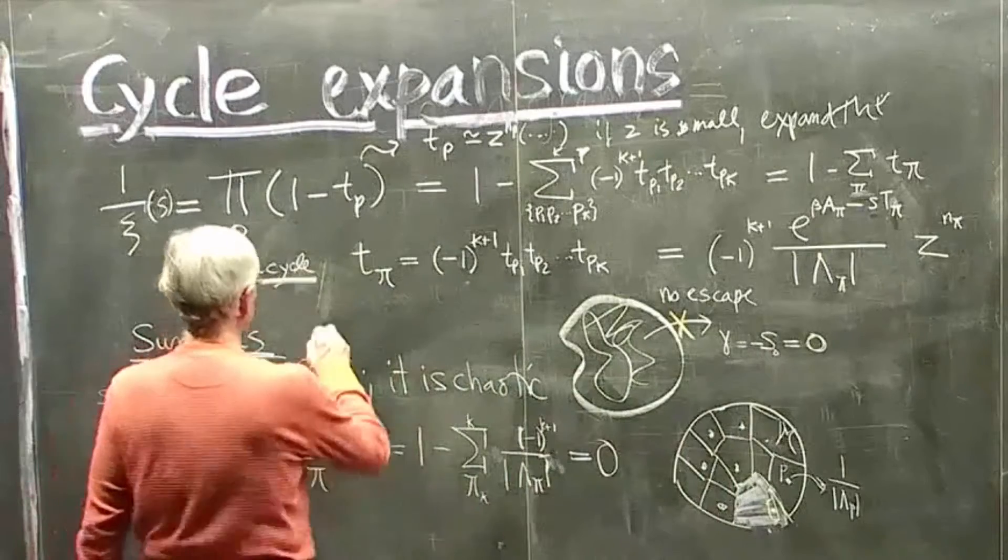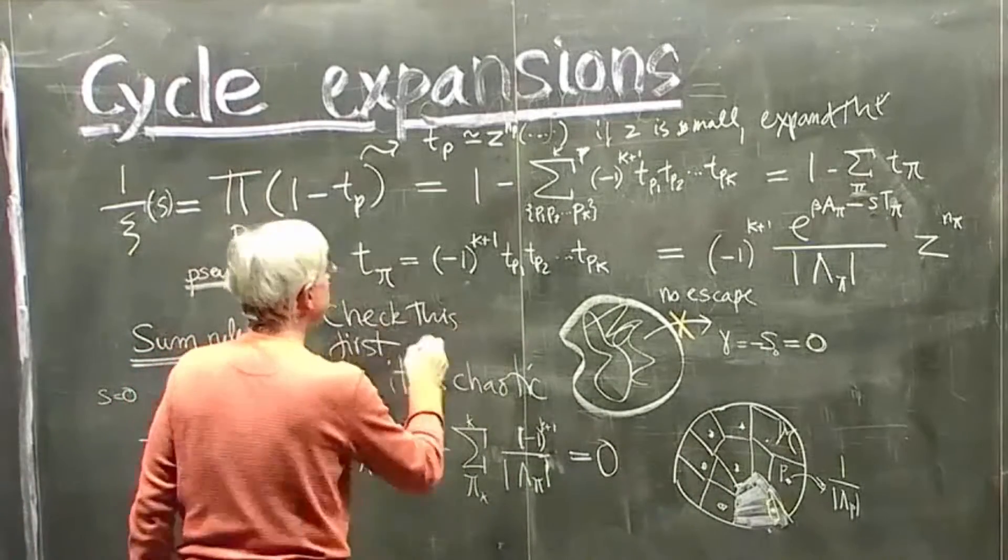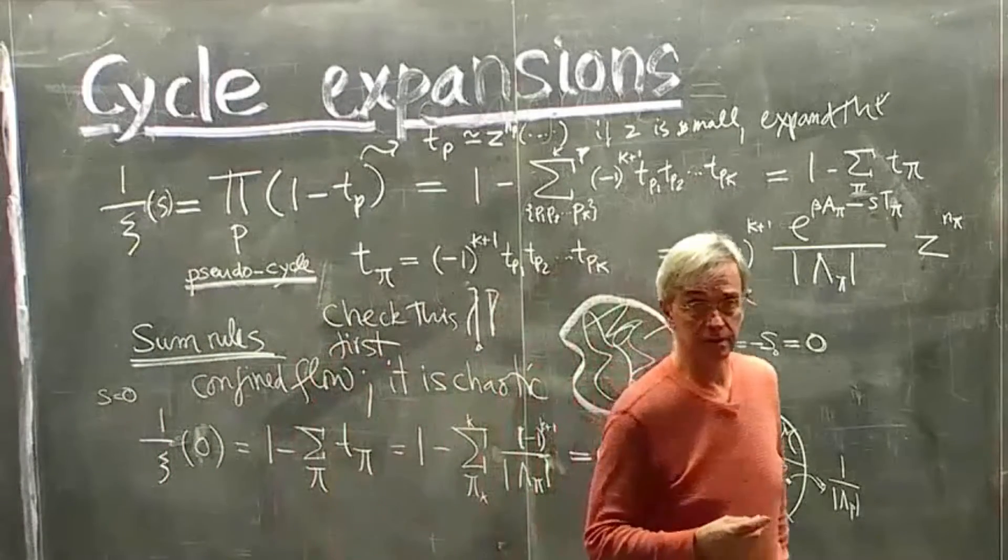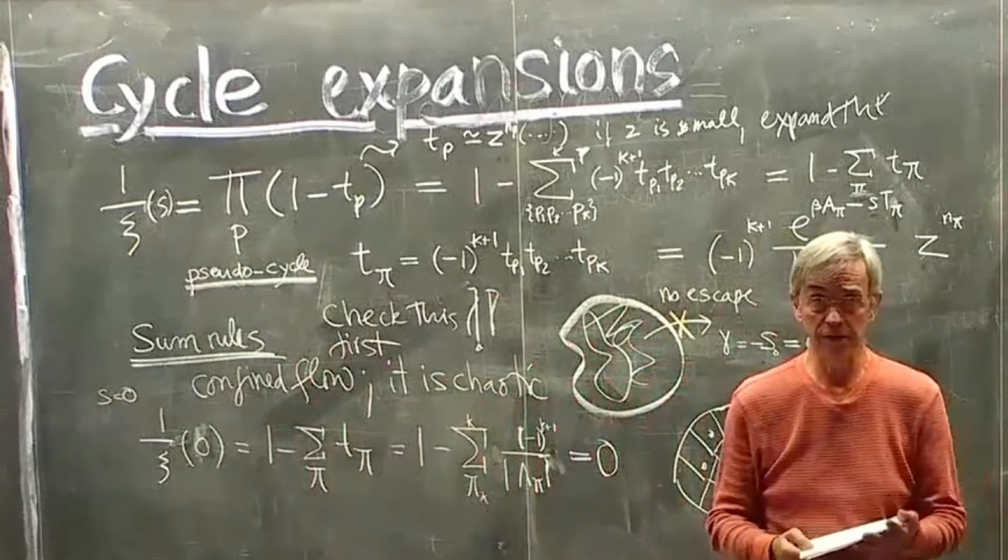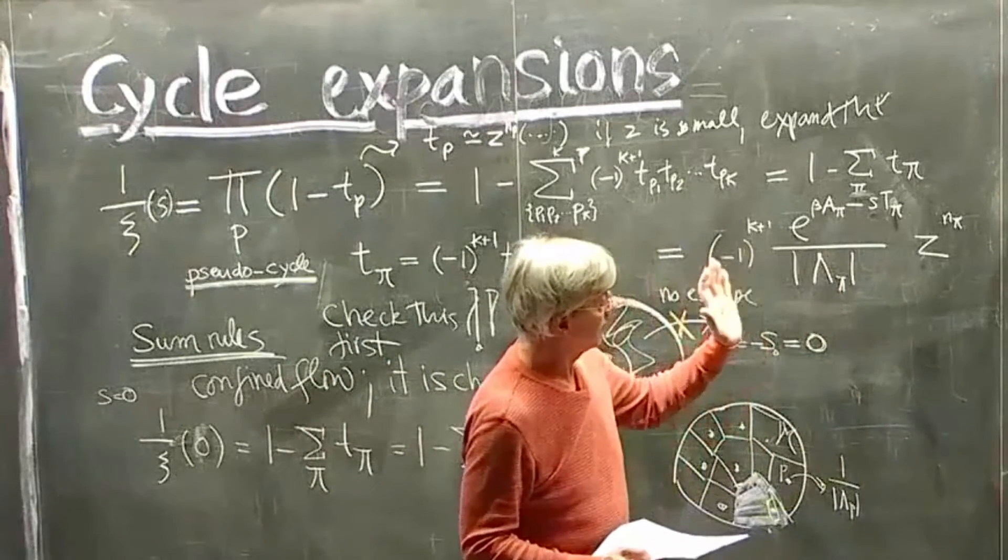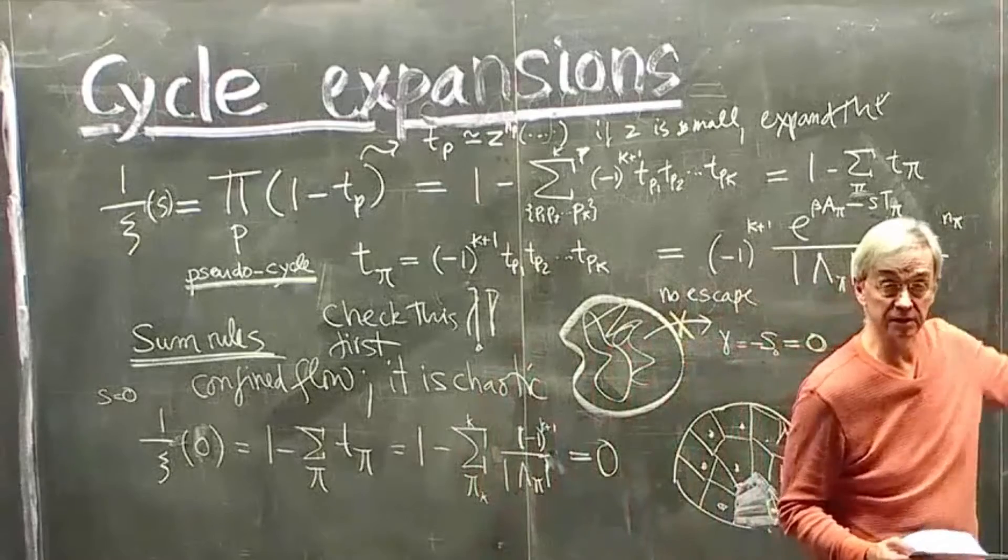So check this first. Now this is the crudest form of the sum rule. In actual calculation, you should really use spectral determinants. I'm using the zeta function for pedagogical purposes, because it's easier to explain.